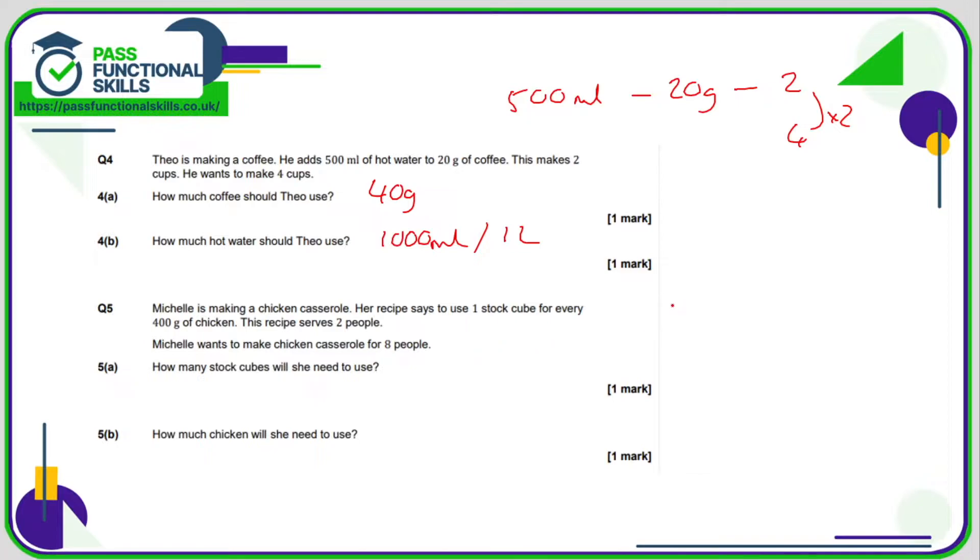Michelle and her chicken casserole, it's one cube for 400 grams of chicken, and this is for two people. If she's making chicken casserole for eight people, that's four times the recipe. She's going to need four stock cubes and four times 400 grams of chicken, so 1600 grams or 1.6 kilos.